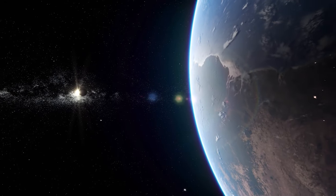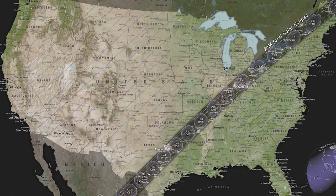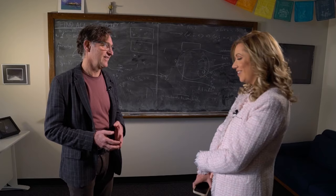Michigan gets a little bit of that path of totality. We have a tiny slice of very far southeast Michigan, roughly up our Lake Erie lakeshore, about as far north as Luna Pier. That's quite far from the center line, and so at Luna Pier the duration of totality is only about 15 seconds. If you can get closer to the center line, that's where you should go.